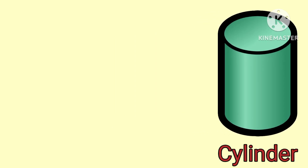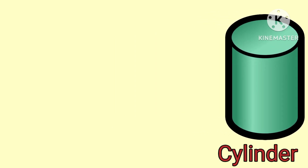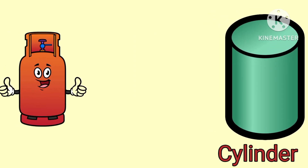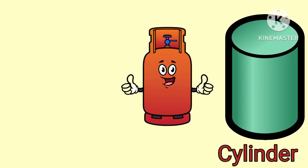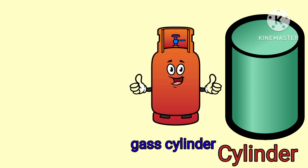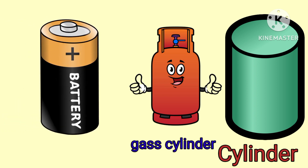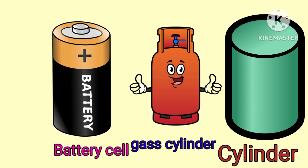Cylinder. A gas cylinder and a battery are examples of a Cylinder. Now repeat.